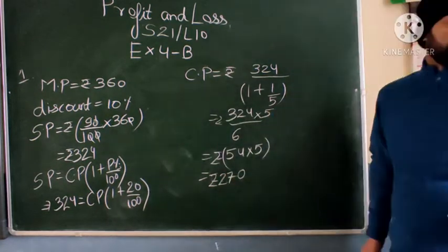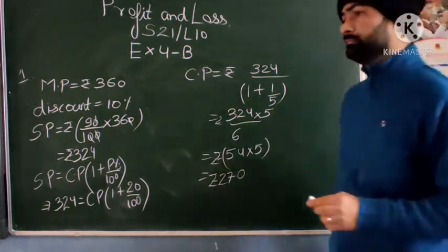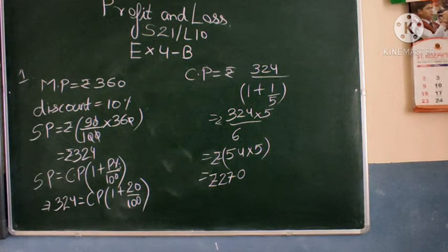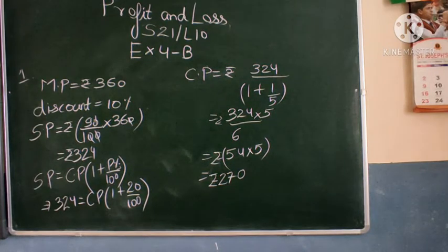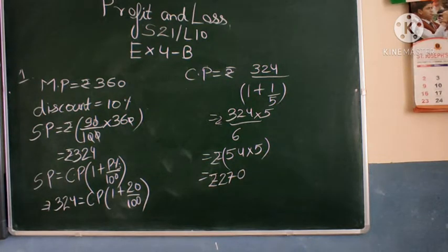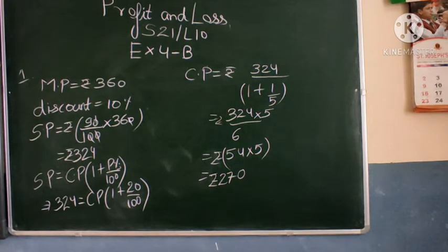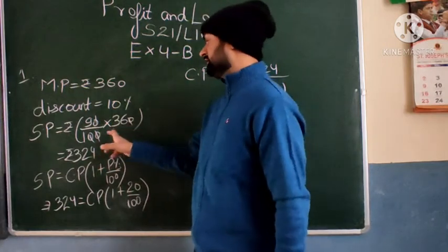CP comes out to Rs. 270, and SP is 324. Now see what this problem is doing. The question gives you the data regarding the marked price and discount, then says that on the mark price you are getting a discount of 10% and even after that discount you are still obtaining some profit. So we first used the formula for calculating SP — discount is 10%, so after 10% discount he is paying only 90% of the marked price. So 90% of the marked price is the selling price, which is 90/100 × 360 = Rs. 324.